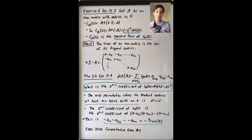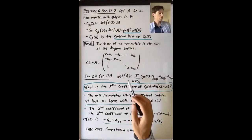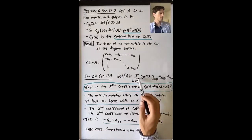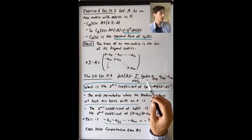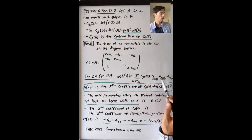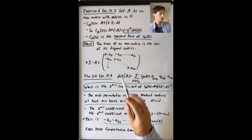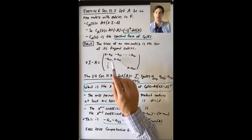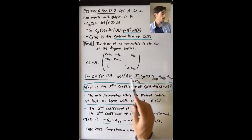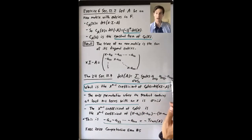Now I want to recall a result about computing determinants. You can compute the determinant of a matrix as a sum over permutations in S_n of products of matrix entries: a sum over sigma of the sign of sigma times A_{sigma(1),1} times A_{sigma(2),2} times ... times A_{sigma(n),n}. Let's apply that here to find the X^{n-1} coefficient of the characteristic polynomial, which is the determinant of this matrix — a giant sum of products of matrix entries.